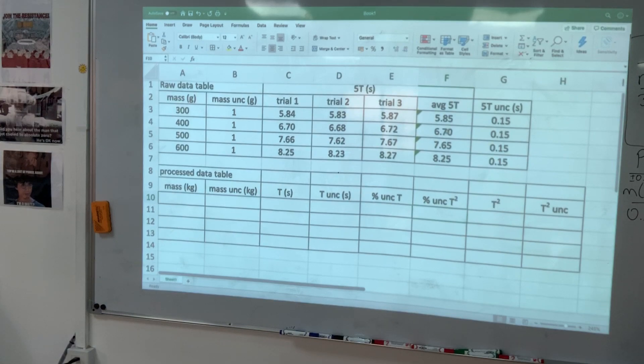Now this is the raw data table. Average can be on the raw data table. First I want to show the processing. Again, I want Excel to do the hard work.